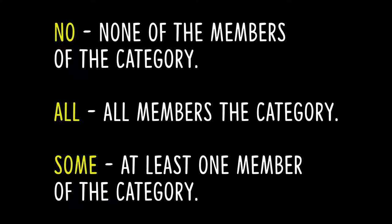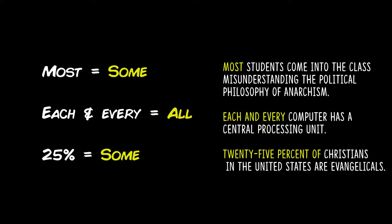Let's look at those quantifiers from our earlier statements and standardize them. 'Most' becomes some — it's not all students, but it's at least one student, and it's not no students. 'Each and every' becomes all, because it's describing the entire class of computers. And finally, 25% of Christians — that's at least one, so it's not none of them and not all of them; 25% is some, too.